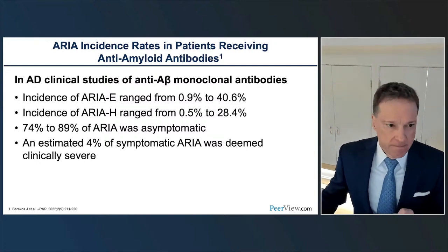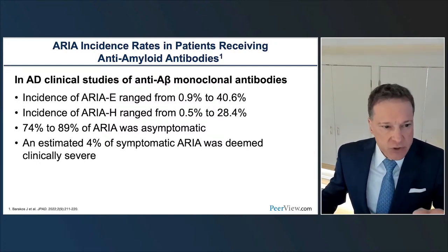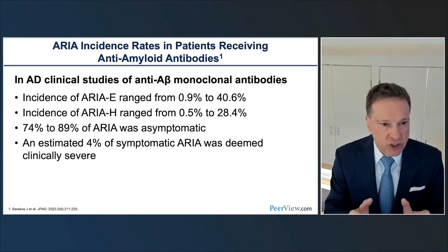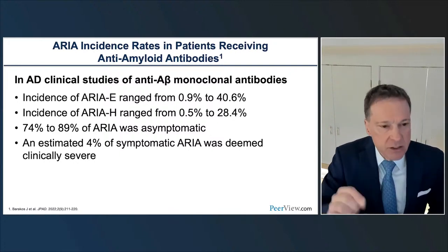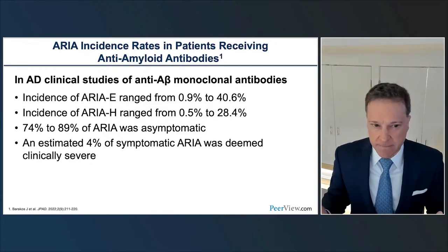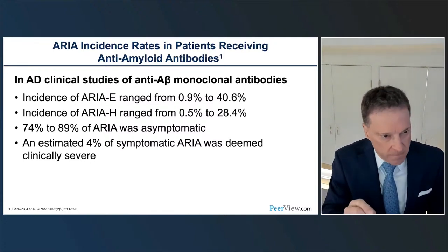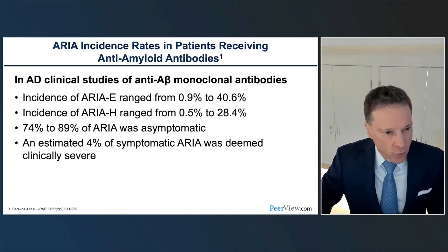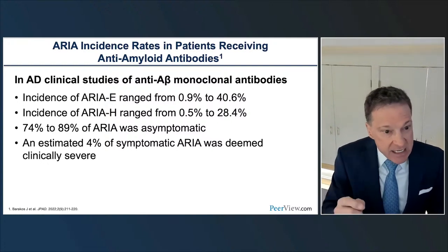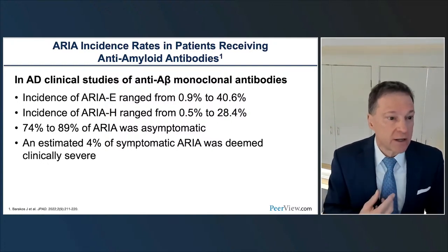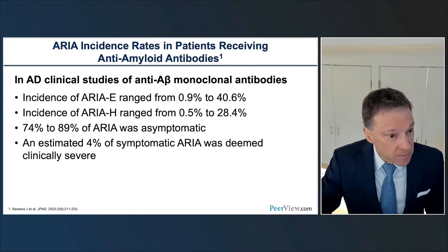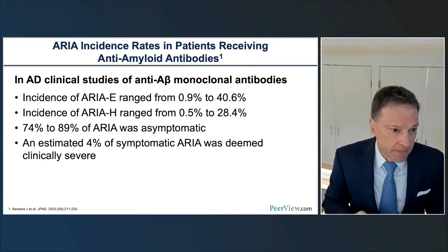Here's a key point: 74% to 89% of ARIA is asymptomatic. The vast majority of these imaging changes are asymptomatic — these changes will be taking place in the patient's brain without clinical symptomatology. That is why imaging is critical. Routine surveillance imaging is performed as the patient is given drugs over many months or years of treatment. If abnormalities develop, we as radiologists must communicate those to clinicians so they can adjust dosage or suspend treatment until findings stabilize or resolve.